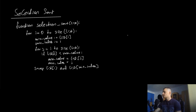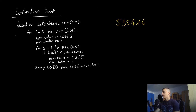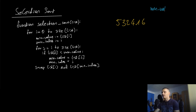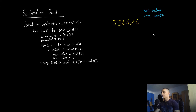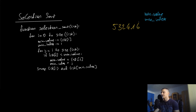Now let's look at the pseudocode. We'll use the list five, three, two, four, one, six. The function selection_sort takes the list as a parameter — the same structure as bubble sort. The outer loop goes from zero to size of list. Inside, we declare two variables: min_value and min_index. We naively set the first element, five, as the minimum value with index zero.